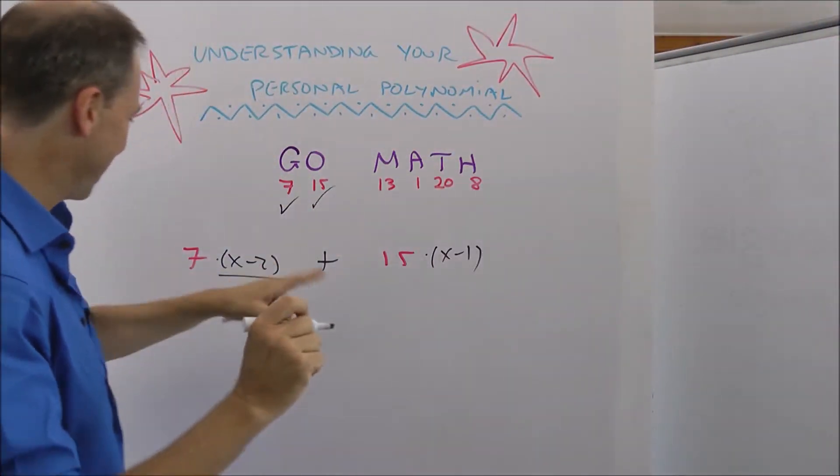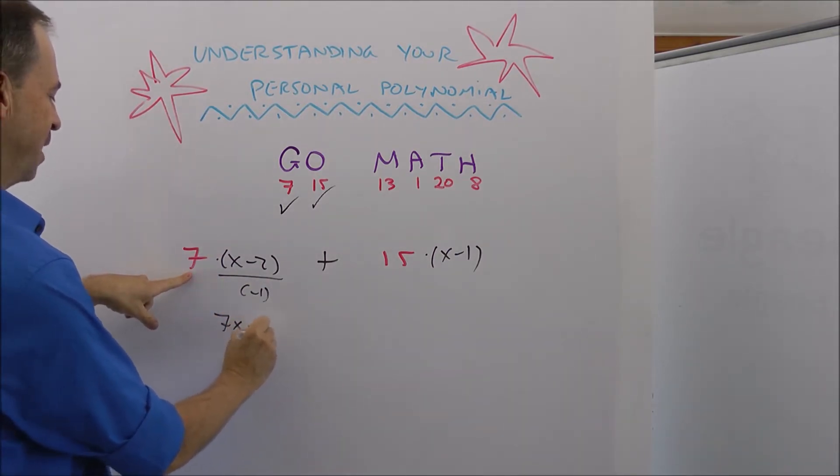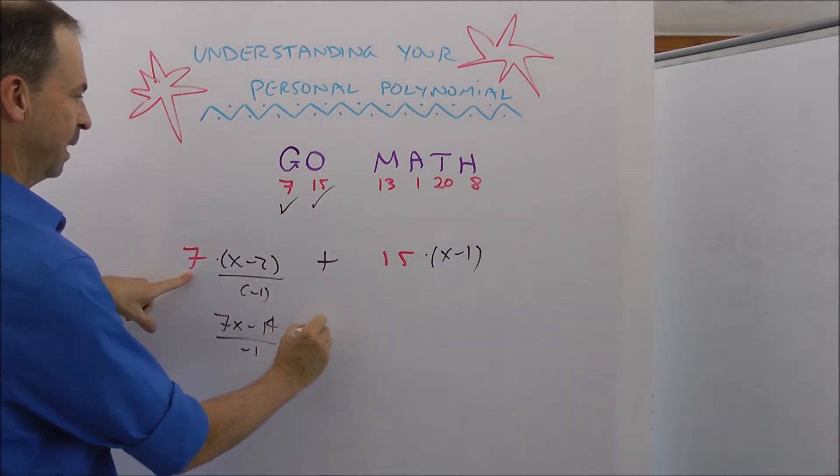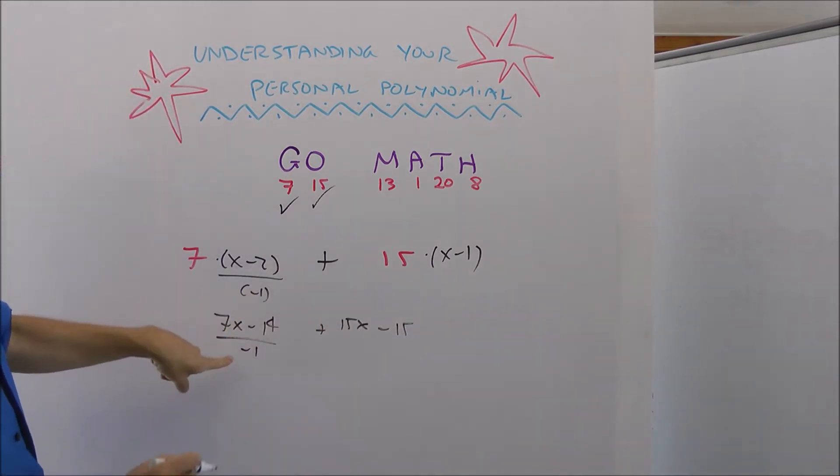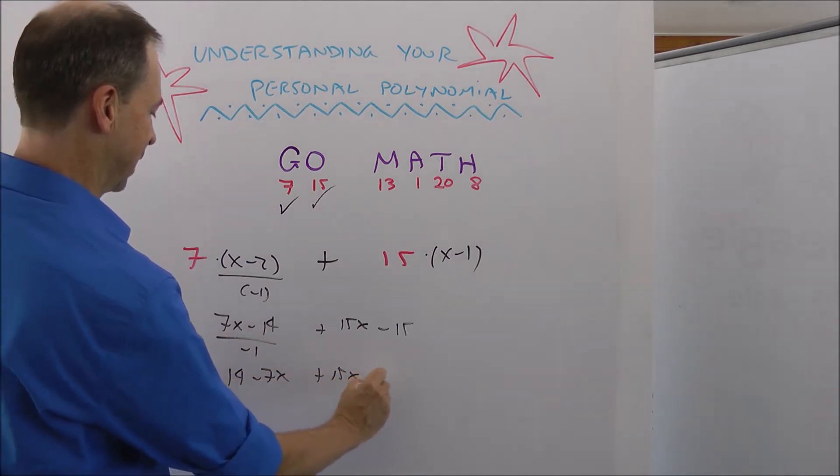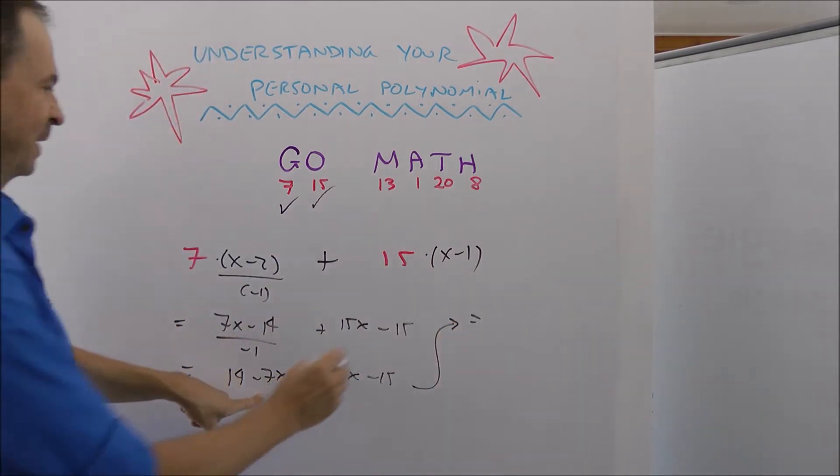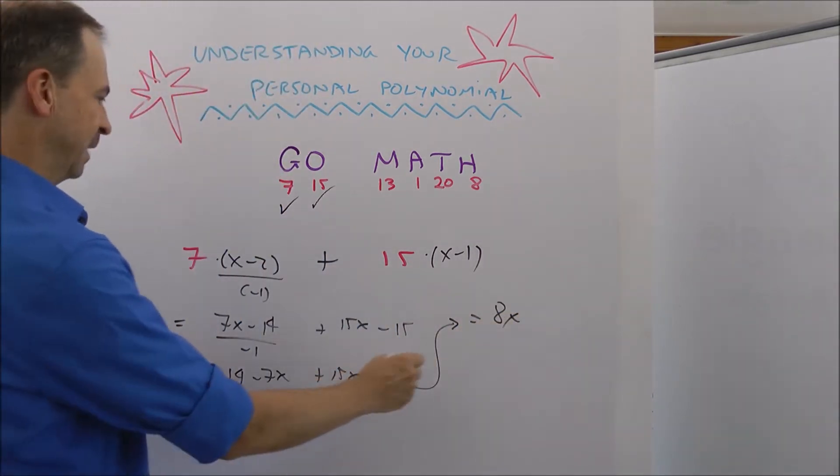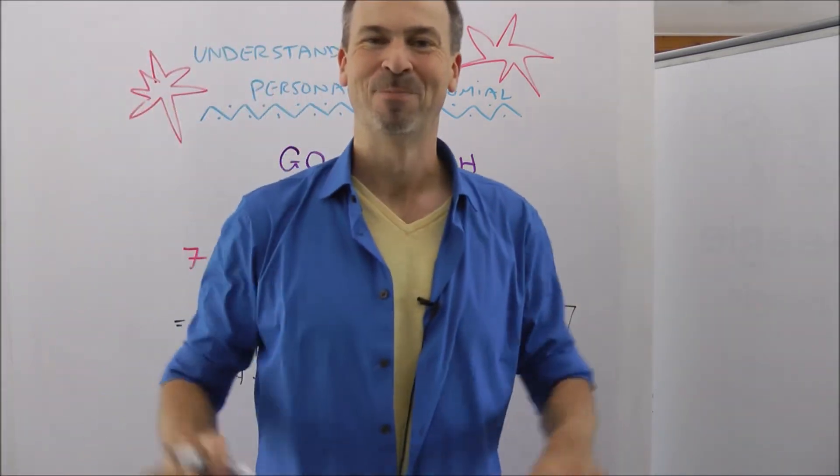Now, it looks pretty messy right now, but I can make it a little bit simpler. For example, this is really 7x minus 14 over negative 1 plus 15x minus 15. That negative one on the bottom really makes this 14 minus 7x plus 15x minus 15. So what does that give me? That gives me 8x's and minus 1. There is the formula that spells GO: 8x minus 1. Grand.